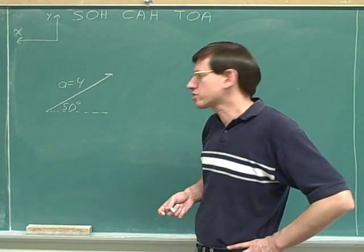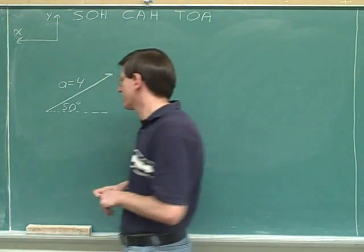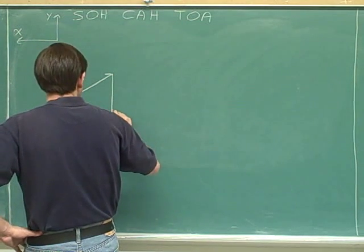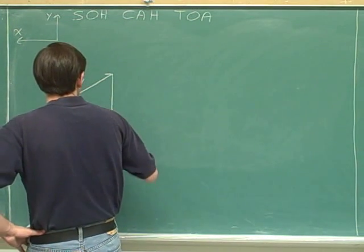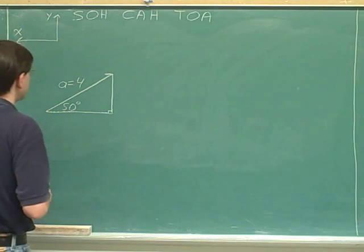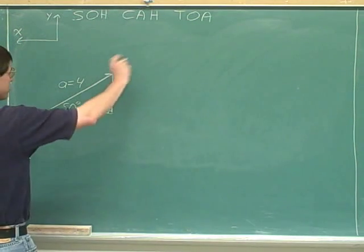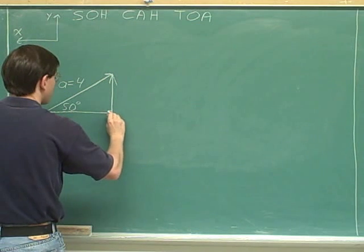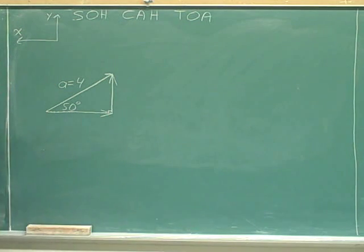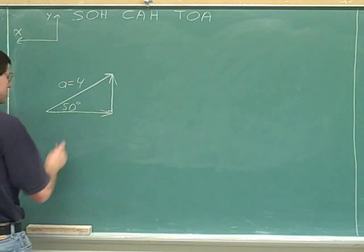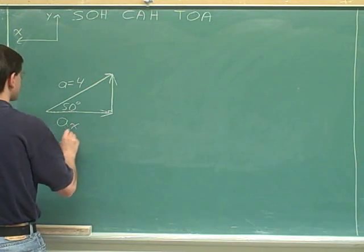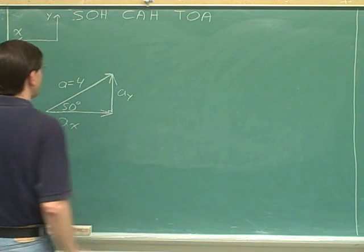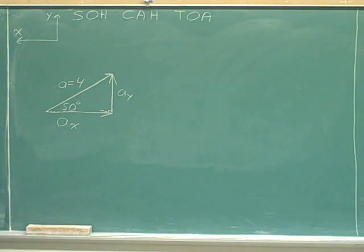We have to draw our right triangle that uses the overall vector as the hypotenuse, where the lengths are parallel to the axes. We've got to put arrows in. The overall vector was pointing up and to the right, so the components are pointing up and to the right. Always label the signs. Here's a sub x parallel to the x-axis, and here's a sub y parallel to the y-axis.